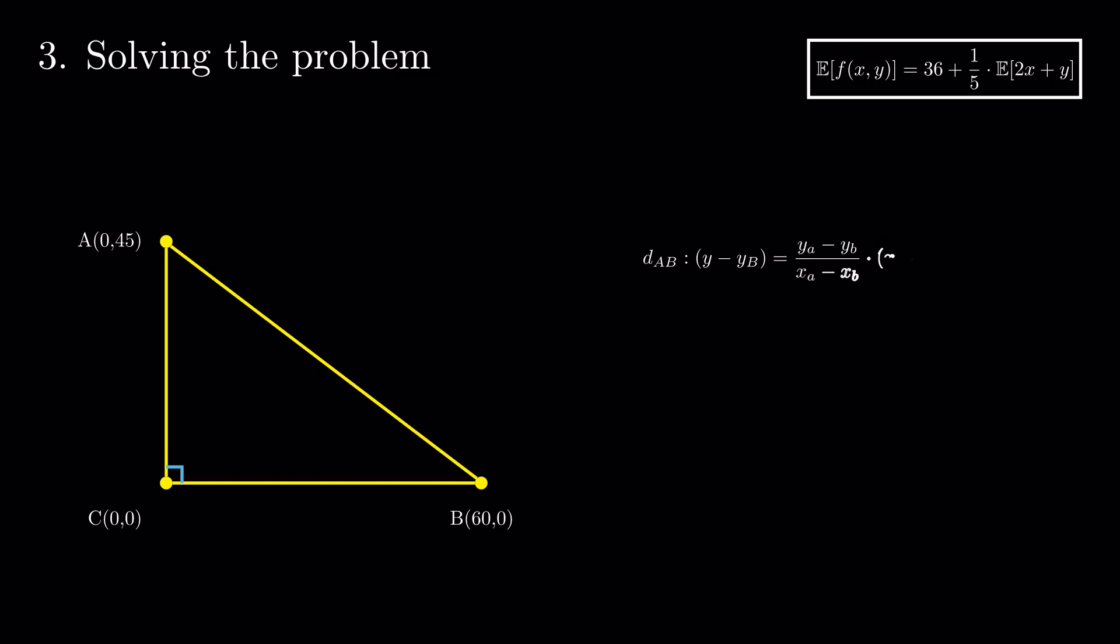Let's take a detour and compute a line equation for a, b. We'll need it later. We just plug in our coordinates into the usual formula and get the equation.